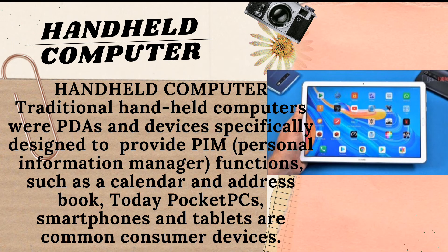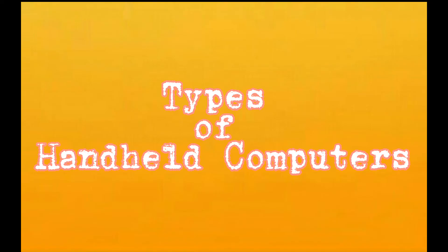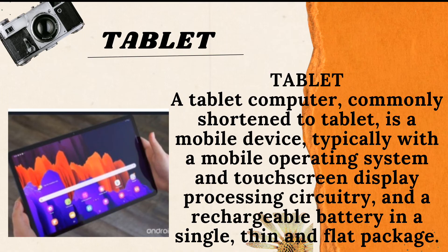Next is handheld computer. Traditional handheld computers, also known as PDAs, are devices designed to provide PIM — personal information manager — functions such as a calendar and address book, with packages now taken over by smartphones and tablets. Here are the types of handheld computers. First, a tablet — a tablet computer, commonly shortened to tablet, is a mobile device typically with a mobile operating system, touchscreen display, processing circuitry, and a rechargeable battery in a thin and flat package.